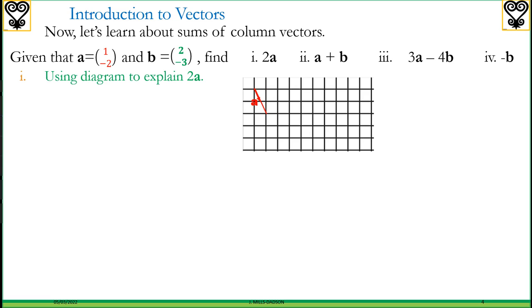If you want to say 2a or draw the vector 2a, it means the length of this vector should be doubled because 2a means twice of a. So we double, and that is 2a.